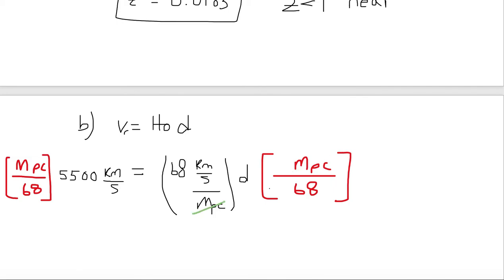Now let's go ahead and divide out what we can. We have a megaparsec in the denominator canceling with a megaparsec in the numerator on the right-hand side. We have 68 in the denominator canceling with 68 in the numerator on the right-hand side. On the left-hand side, we've got 5,500 kilometers per second. So we can drop out the kilometers per second because we have kilometers per second on the right-hand side.